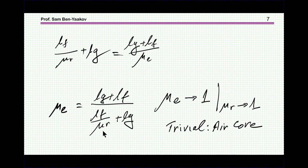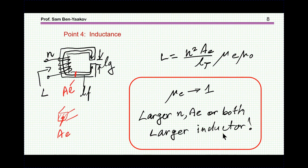Now, of course, if there is no ferrite — it's just air — then obviously mu_sub_R is one, and we get that the permeability is one, because we're going back to an air core. So we can then look at the inductance and how it depends on the dimensions, number of turns, et cetera. The inductance is equal to N squared times area over the total length, times mu_e — looking at the core as a whole — times mu_zero. This is the total permeability.